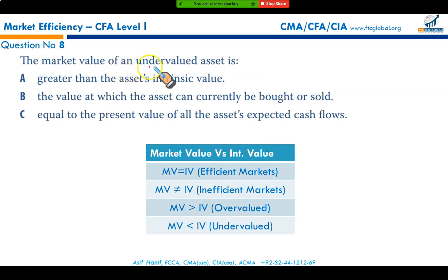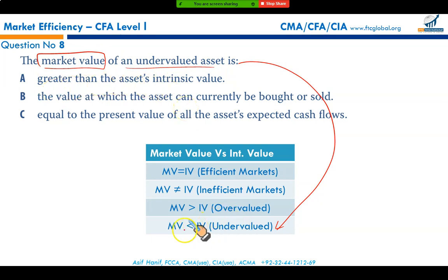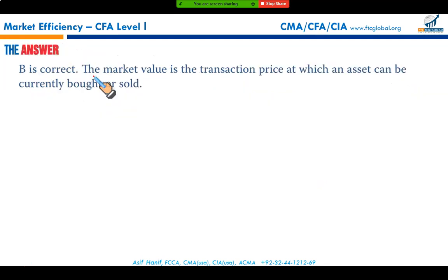The market value of an undervalued asset is less than the asset's intrinsic value. Market value is the price at which the asset can currently be bought or sold in the market. Option B is in fact the definition of market value, making B the correct answer.